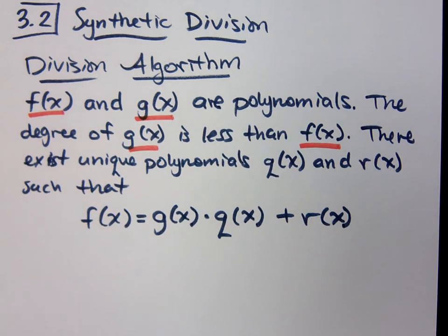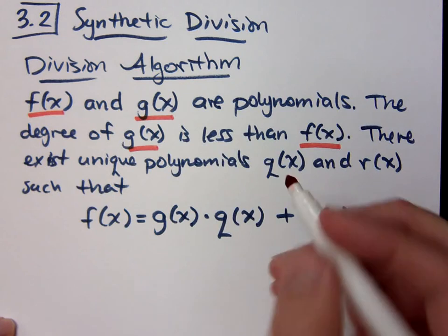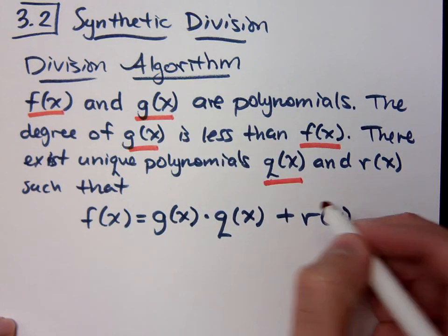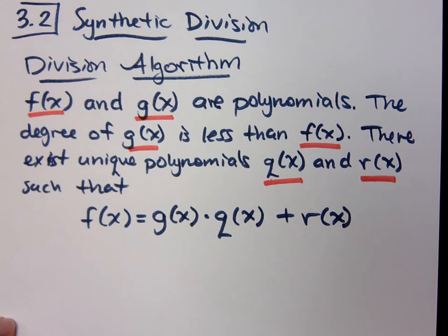When you're dividing, because that's essentially what we're doing here, you want to be dividing by something smaller than what you are, right? Typically, that's how we do this. When you do division, you get a quotient and you have a remainder.